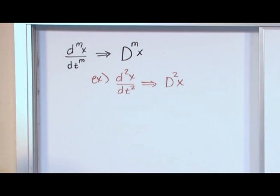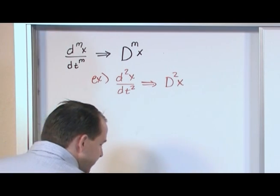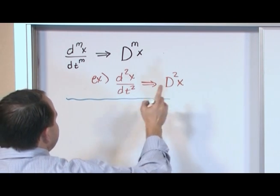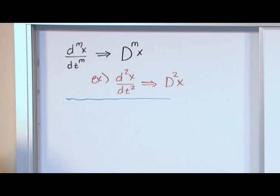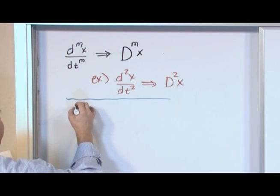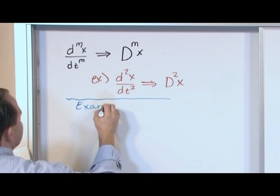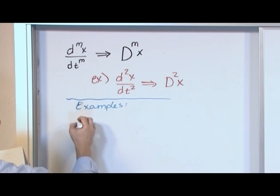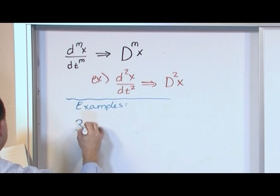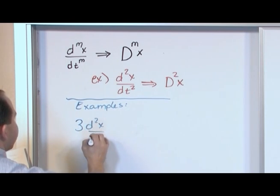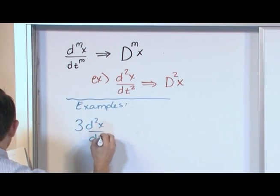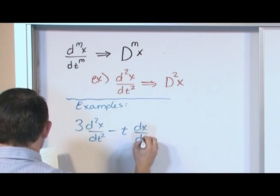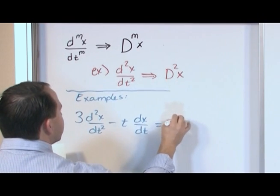So basically, that's the way it works, and it's going to greatly simplify how we write our differential equations, and also some of the solution methods we use later. This notation is going to make it much easier. So as examples, what if we had the differential equation in the old notation, 3 times second derivative of x with respect to time minus t dx dt equals t squared.